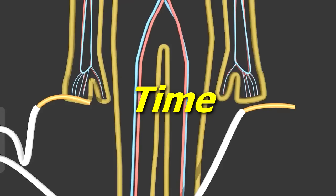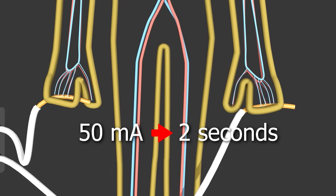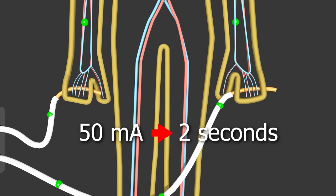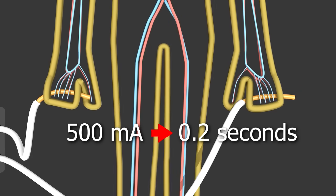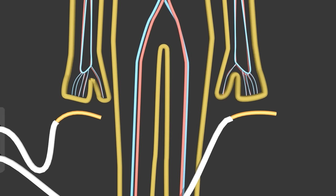How long the current flows also has an effect. At 50 milliamps, if you manage to let go within 2 seconds, then you'll be okay. But if the current is 500 milliamps, then you have just 0.2 seconds, 2 tenths of a second, to let go and still be okay.